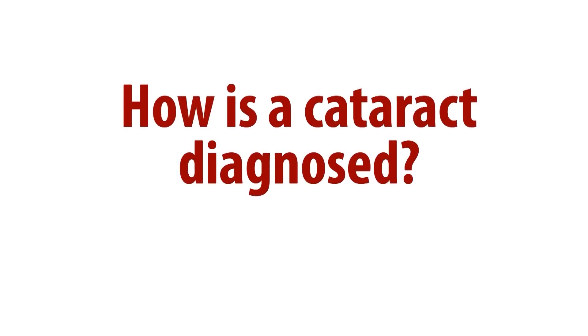The cataract is diagnosed by looking into the eye through a microscope called the slit lamp. Most people with cataract have some form of vision difficulty — either blurry vision or difficulty with bright light. They experience glare, especially on a bright sunny day or when driving at night, where oncoming headlights would bother them.